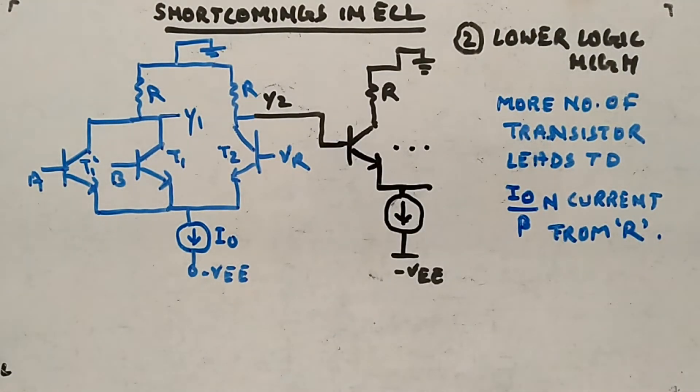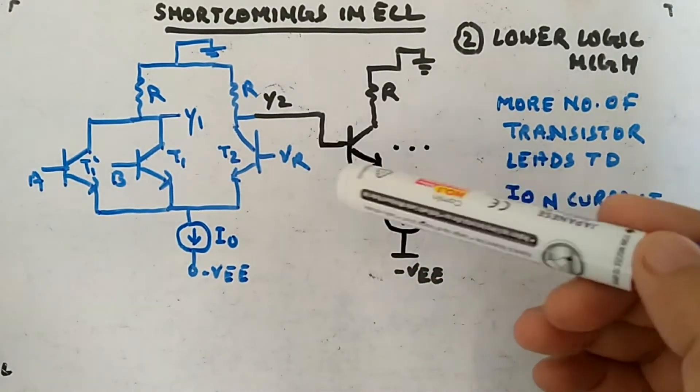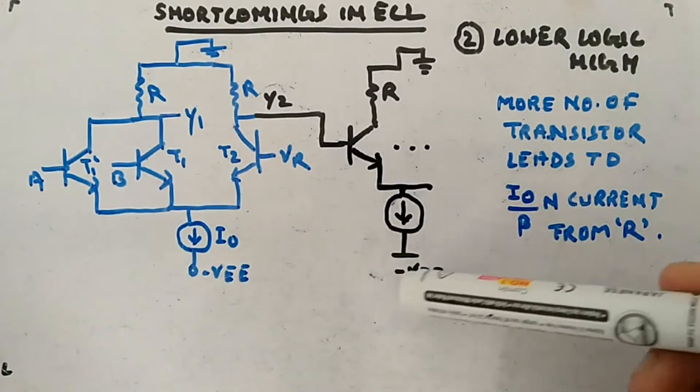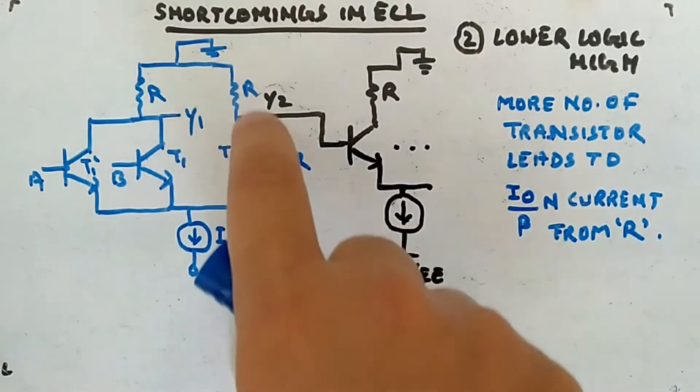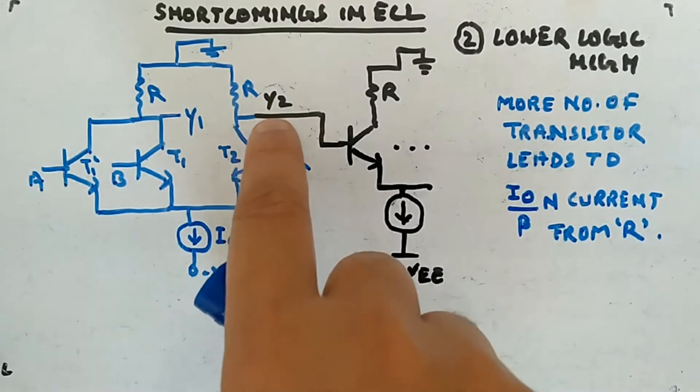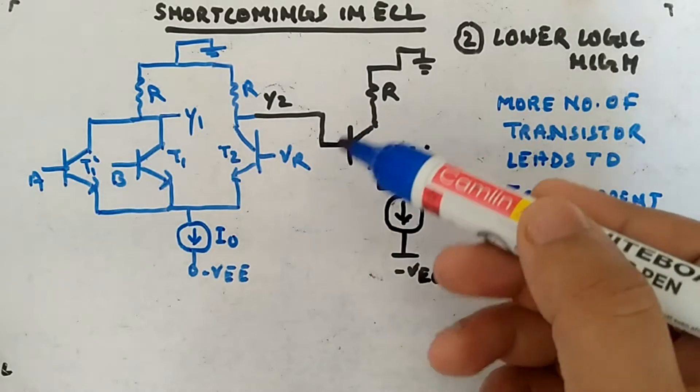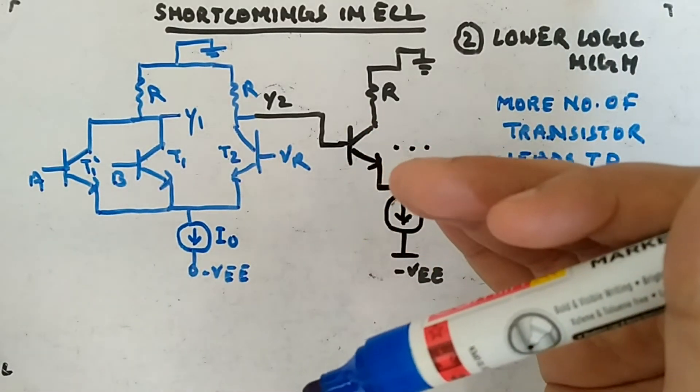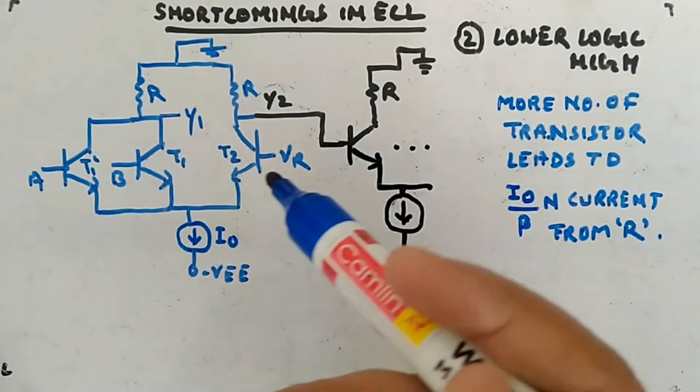Now let's look at the second shortcoming: lowering of logic high. What happens if you are trying to drive some other gate? Let's say this is a transistor same as this and you have I0, VEE. If this output is zero, which is logic high, this will start conducting. Logic high you are providing, then this will start conducting.